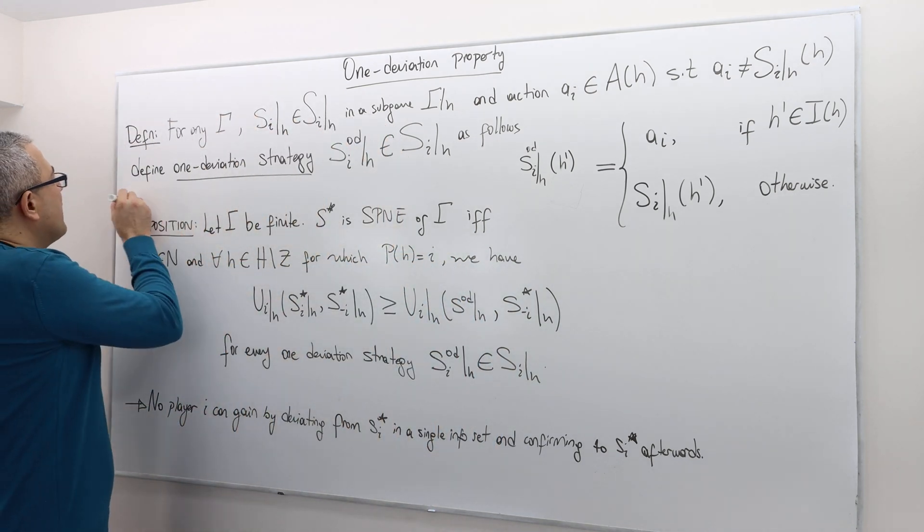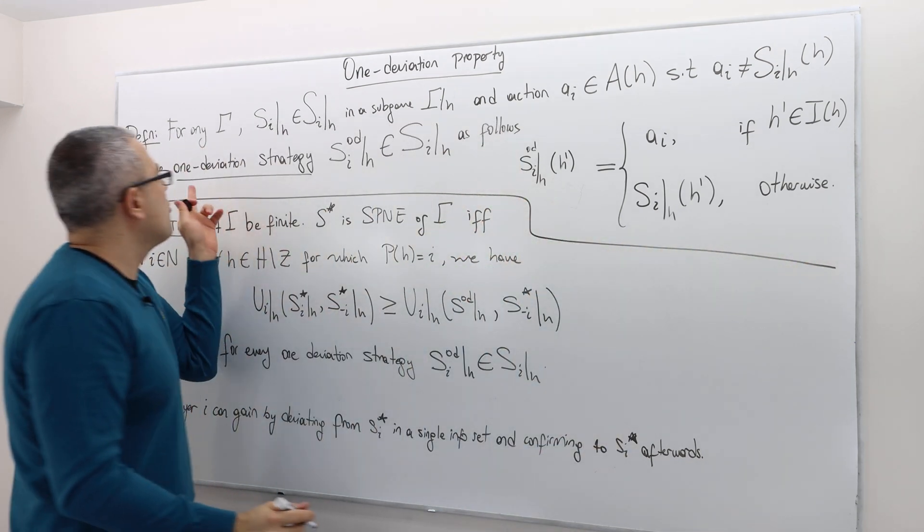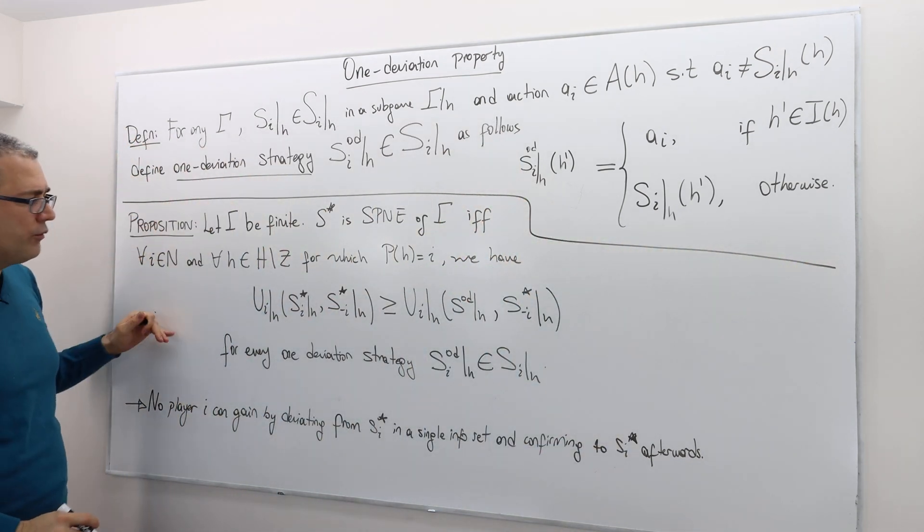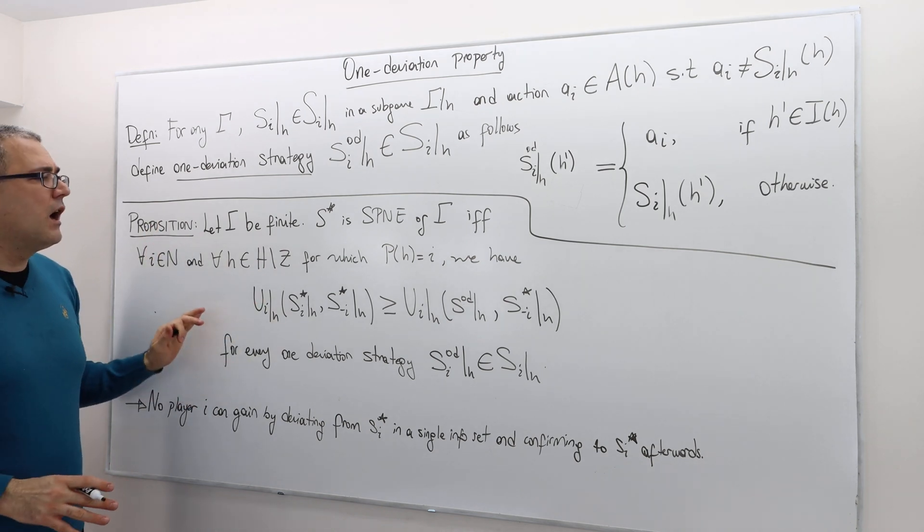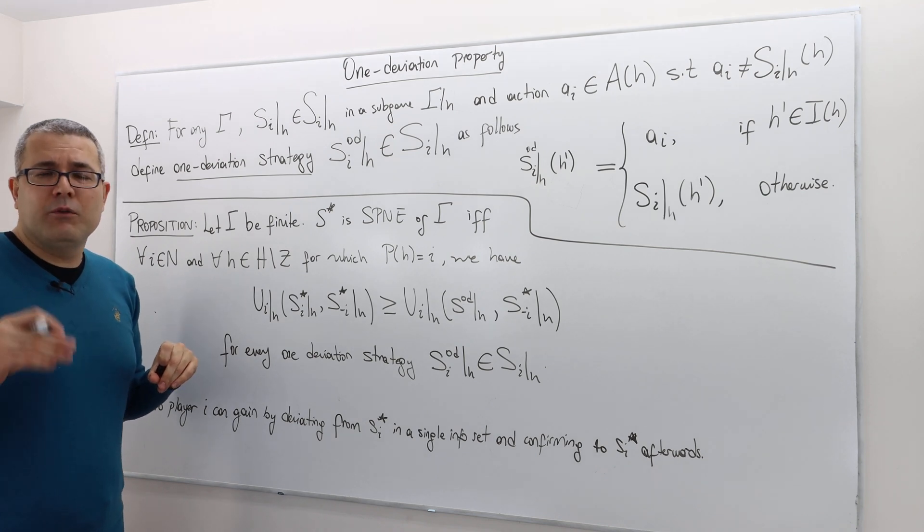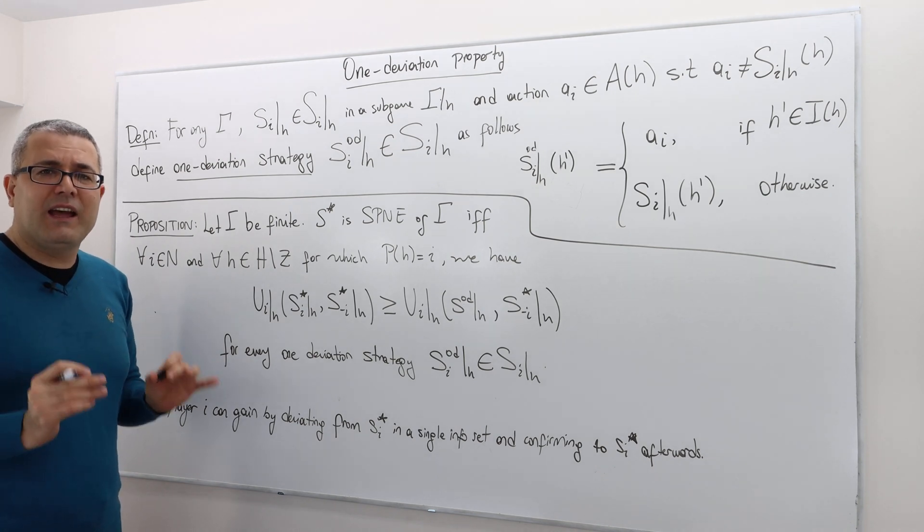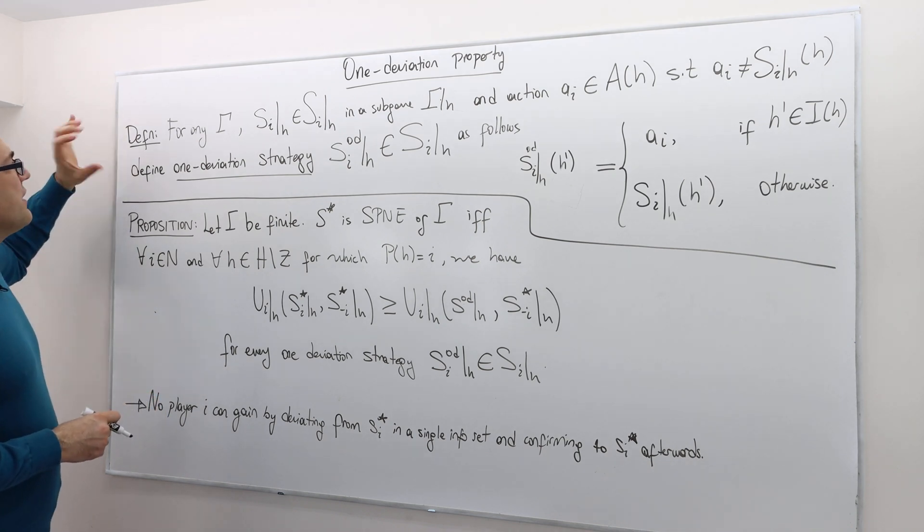So I'm going to give you a definition first, where we define what's called one deviation strategy. And then I'm going to give you a proposition. I'm not going to prove it. Because for this course, what matters is what it means and how you apply it. So as long as you get that, that's all I really want.